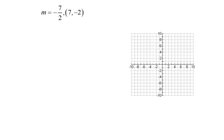So our directions are, we're going to write the equation of a line having this slope going through this point, and then we're going to graph it.